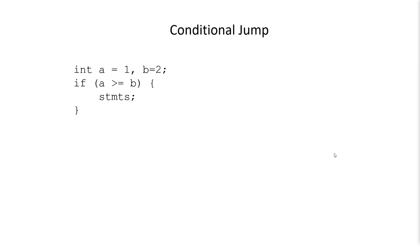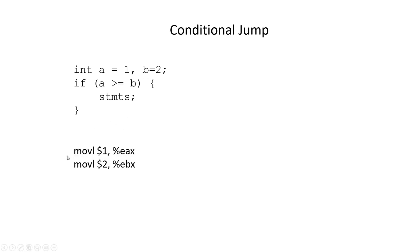I've got something very simple here. I'm declaring two variables, A and B. I'm going to compare them. If A is greater than or equal to B, then I'm going to do what's in these statements. If not, I'm going to skip it. First I need to store the values of A and B somewhere. I'm going to pick the EAX and EBX registers. The dollar sign means I'm storing an immediate value in them, so now I've got my two pieces of data in registers.